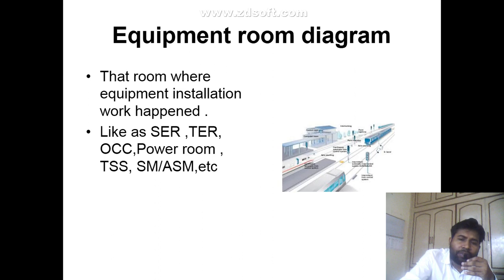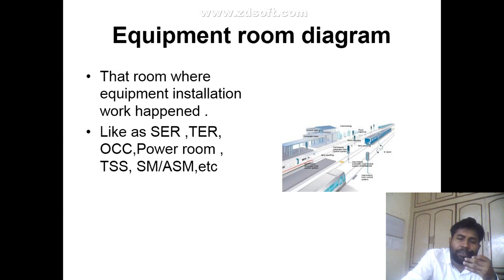Next is the equipment room diagram. This refers to the room where equipment is installed and work is carried out — such as the signal equipment room, telecom equipment room, OCC, power room, TSS, station master room, control room, CTC room, etc. The room where equipment is installed is called the equipment room.